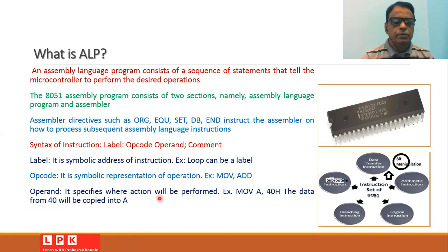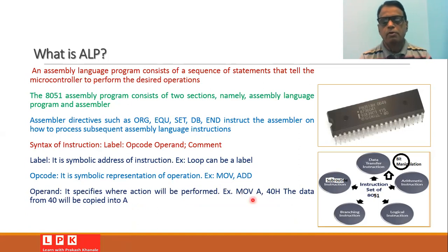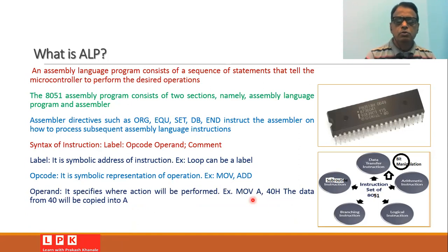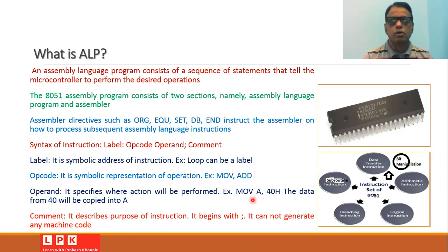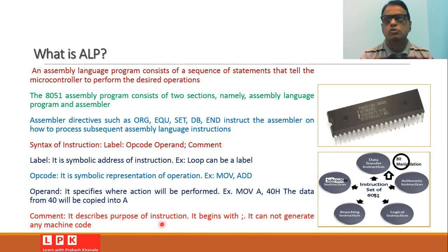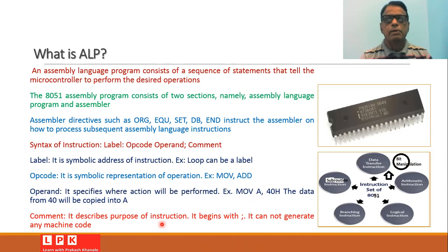The operand specifies where the action is to be performed. For example, when we write the instruction MOV A, #40h, the data 40h will be copied into accumulator A. Comments are useful for the programmer because they describe the purpose of the instruction. Every comment begins with a semicolon, and comments do not generate any machine code.